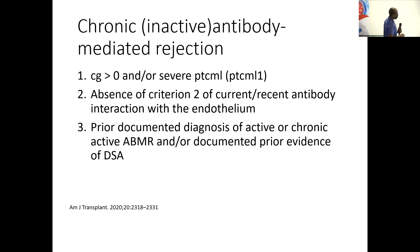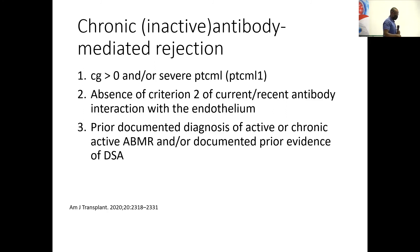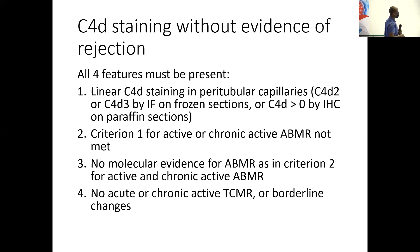The second-to-last category is chronic inactive antibody-mediated rejection, where you have changes suggestive of chronic injury but no current evidence of recent or ongoing antibody interaction with the endothelium. There is debate about whether a historical DSA would qualify as prior evidence of antibody in the patient's serum, and there is no clear definition of how far back constitutes recent versus remote — another issue that needs clarification.